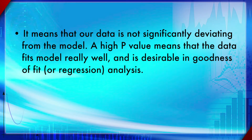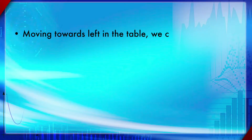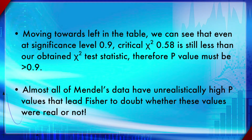The data is not significantly deviating from the model — Mendel's observed results closely match his theoretical expectations. A high p-value means the data fits the model very well, which is desirable in goodness of fit or regression analysis. In fact, moving left in the chi-square table, even at significance level 0.9 the critical value 0.58 is still greater than our statistic, so p is even greater than 0.9.